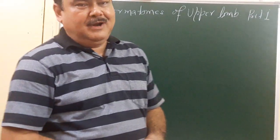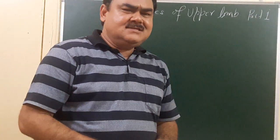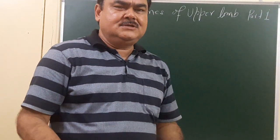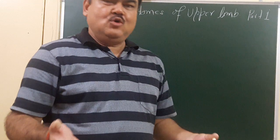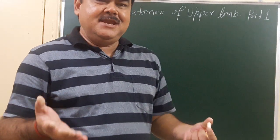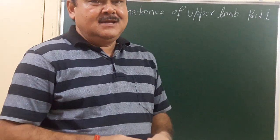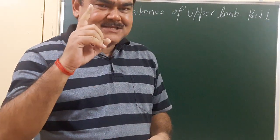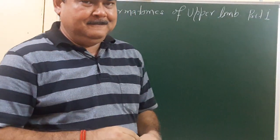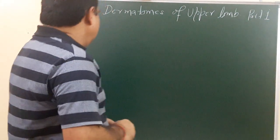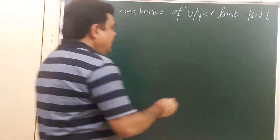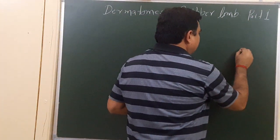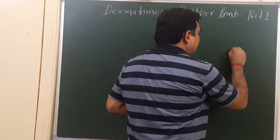The upper limb, part one. In this section we'll discuss about the dermatomes. A dermatome is the area of the skin supplied by one spinal segment. Here you see the developmental aspect.